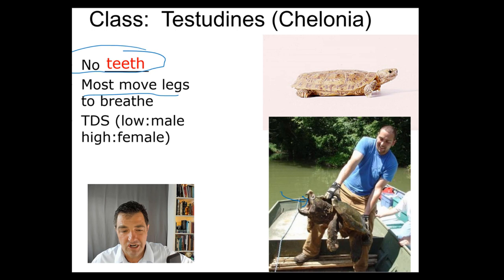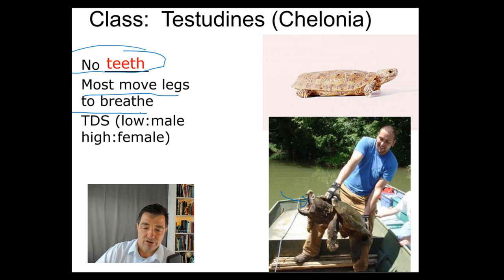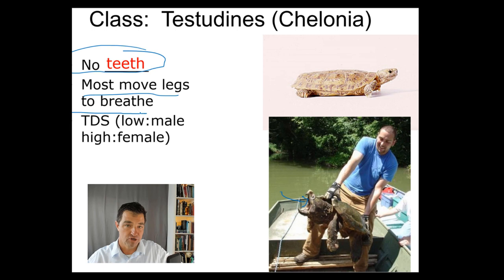Most turtles, because they have that hard outside shell, move their legs in part to breathe. In order to breathe, you have to expand and contract the lungs. If you're a turtle, the rib cage surrounds the animal and is fused together as a solid bone structure, with scales on the outside — the scutes on the plastron and the carapace — and that doesn't move, it's not very flexible. So in order for a turtle to breathe, they often have to move their legs, which makes the body bigger or smaller on the inside.